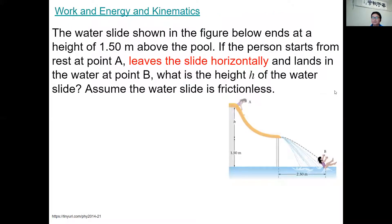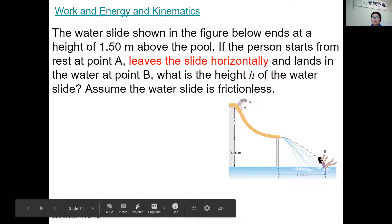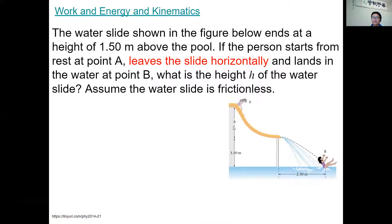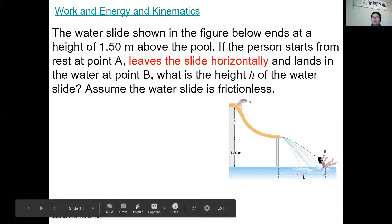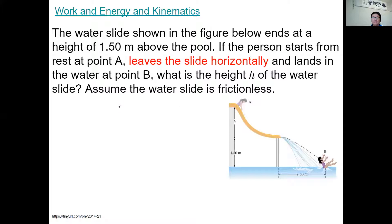Today we are going to expand the conservation of energy, also applying kinematics into the problem. We'll take a look at this example: a water slide ends at a height of 1.5 meters above the pool. The person starts from rest at point A, leaves the slide horizontally, and lands in the water at point B, which is 2.5 meters away. We are asked to find the height of the water slide, and the slide is assumed to be frictionless.